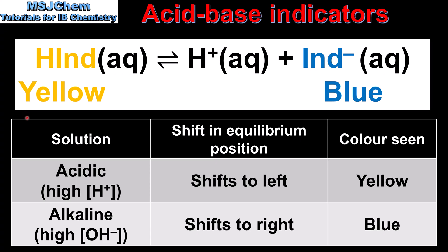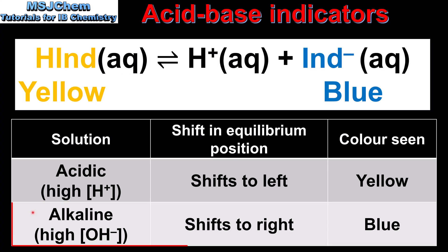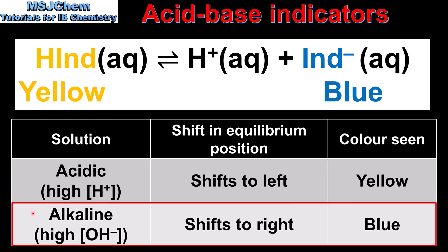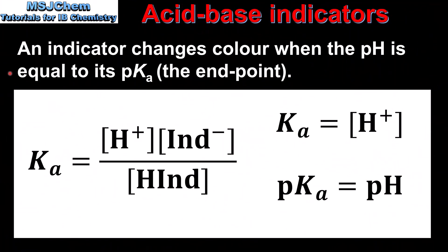We can summarize this in the table: in an acidic solution, the equilibrium position shifts to the left and the color seen is yellow. In an alkaline solution, the equilibrium position shifts to the right and the color seen is blue.